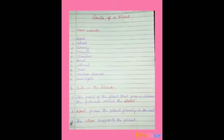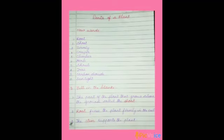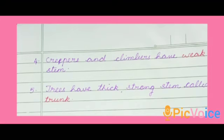Now, fill in the blanks. The part of the plant that grows above the ground is called — shoot. The part that fixes the plant firmly in the soil is — root. The part that supports the plant is — the stem. Creepers and climbers have — weak stem. The stem of a tree is called — trunk, T-R-U-N-K.